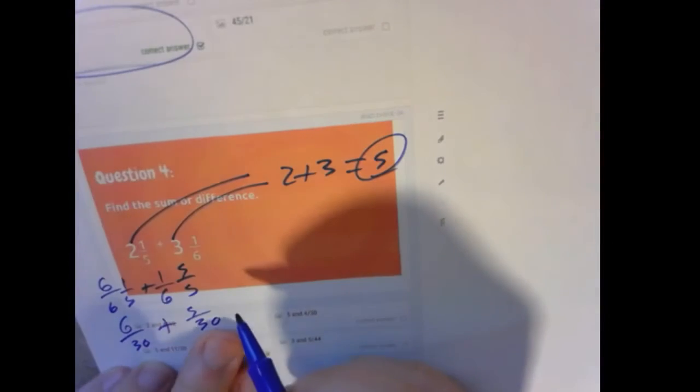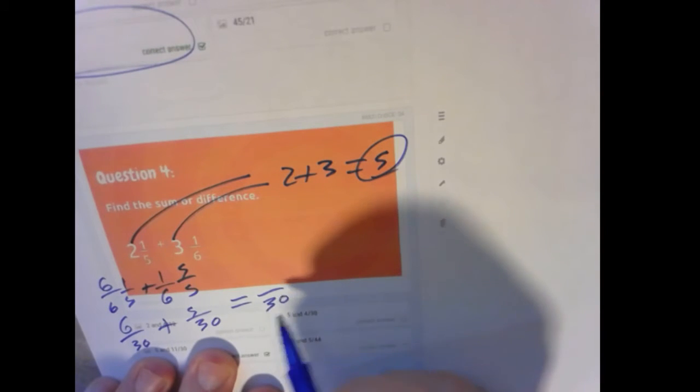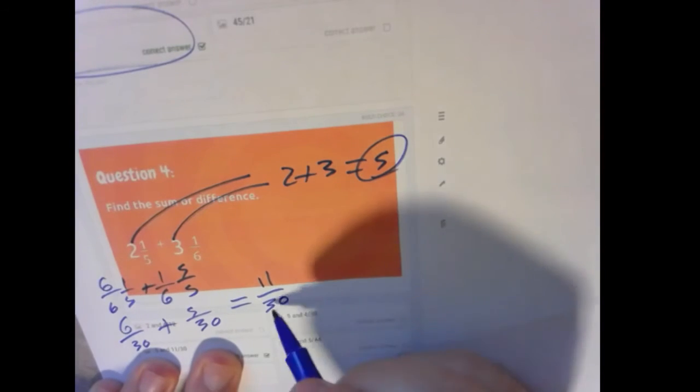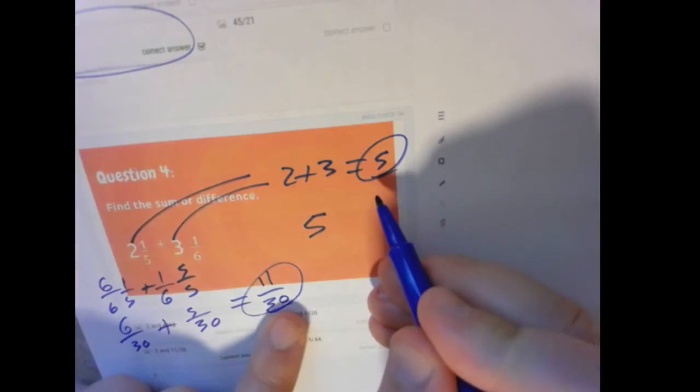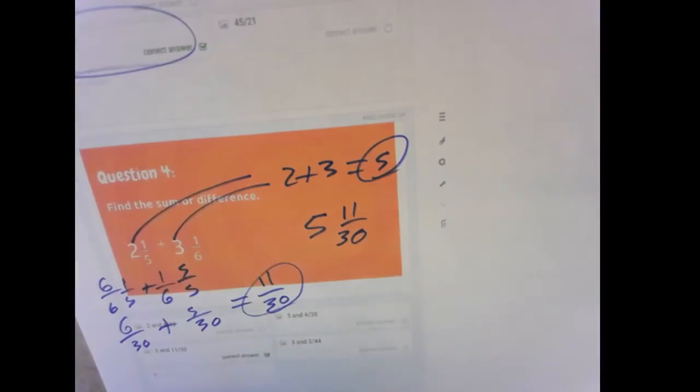If we add those together, remember we don't change the 30. We keep it as over 30. The fraction becomes 11 over 30. So putting these together, we have 5 and 11/30. And that's it for today. Good job.